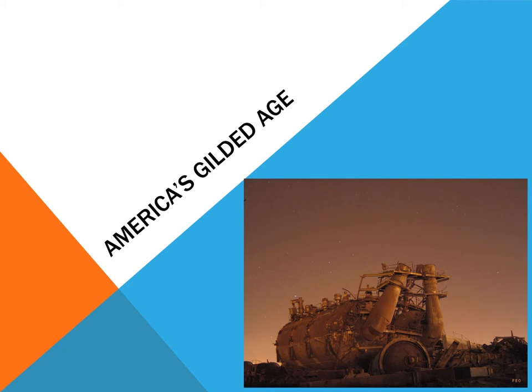The Gilded Age is a term that Mark Twain coined. The word 'gilded' means you've got some cheap metal with a thin covering of gold over it. If you look at that object, it looks like it's gold and must be worth a lot of money. But then you scratch a little bit and you realize it's not actually all the way there — it's just a hunk of cheap tin with a little bit of gold on top. That's what he coined this part of America as: it looks nice on the outside, scratch it a little and you've got a problem.